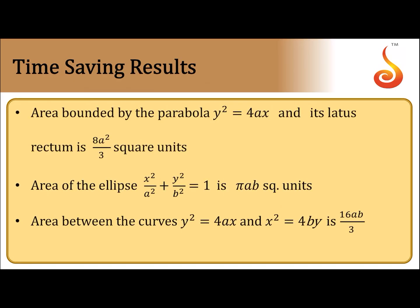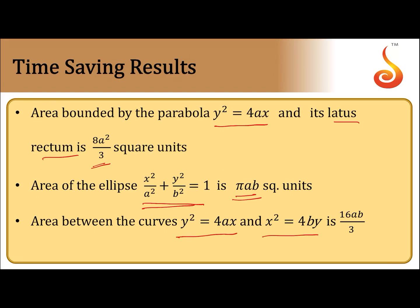There are certain formulae which save time if you memorize them. The area bounded by the curve y² = 4ax and its latus rectum is 8a²/3. The area of the ellipse x²/a² + y²/b² = 1 is πab. The area between the curves y² = 4ax and x² = 4by is 16ab/3.